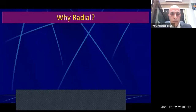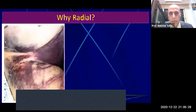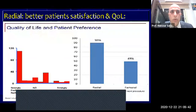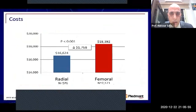First of all, I would like to ask: why radial? This question should be asked by all interventional cardiologists. Why radial? Because of the proven safety profile, as opposed to the transfemoral approach — mainly due to less local vascular complications. Also because of better patient satisfaction, better quality of life, early ambulation, and early discharge from the hospital with cost-effectiveness.